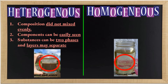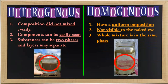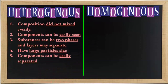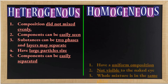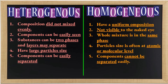For homogeneous mixtures, the whole mixture is in the same phase — for example, water and sugar, where you cannot identify the sugar and water because they mix evenly. Lastly, heterogeneous mixture components can be easily separated using physical means such as filtration, by hand, or magnets. Homogeneous mixture components, on the other hand, cannot be separated easily, but you can use mechanical ways such as evaporation, condensation, or distillation.